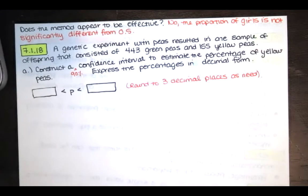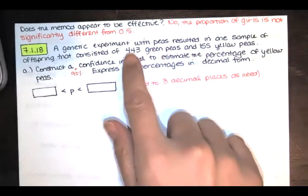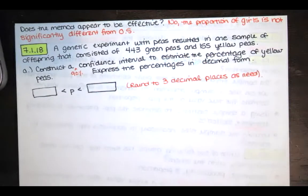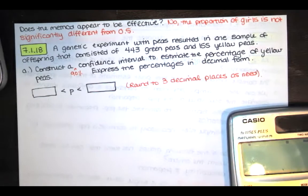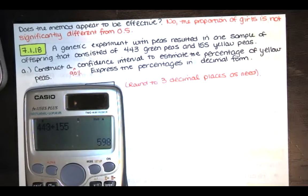There's a fixed number of trials. We have 443 green peas and 155 yellow peas. So the sample size, the total number of peas, is 443 plus 155. So 598. We have 598 trials.